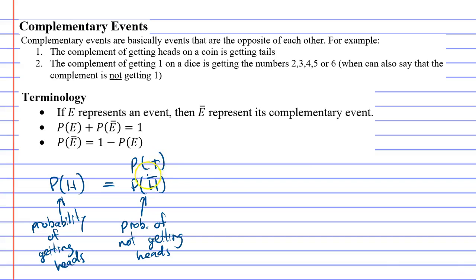Okay, so let's look at it from the perspective of a dice. Let's say we're talking about the probability of getting one on a dice, right? If we look at its complement, the complement of that would be one with a line above it. And its complement is saying the probability of not getting a one, as opposed to getting a one.